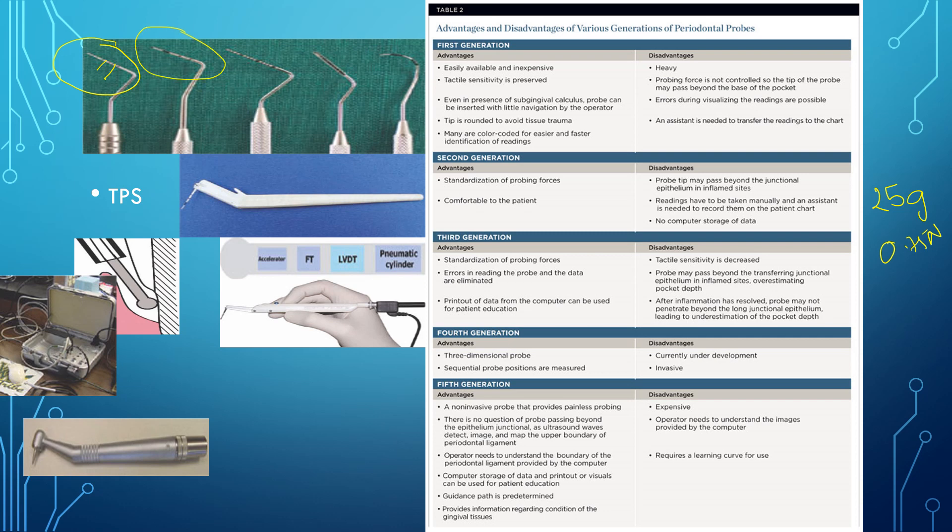The second probe which you see over here is a WHO probe. When it is a CPITN probe, WHO CPITN probe, you can see a 0.5 mm ball over here in the starting. And then there are calibrations which are from 3.5 to 5.5 which is color coded. Then the next calibration is on 8.5 and the third calibration or the final calibration is on 11.5. So these are the markings of WHO CPITN probe.